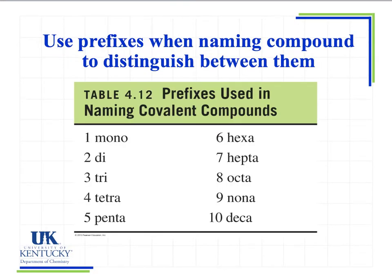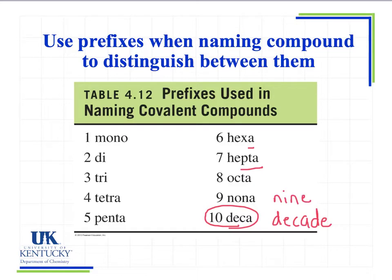The prefixes that tell us what we're looking at are: mono means one, di, tri, tetra, penta, hexa, hepta, octa, nona, and deca. So anytime I see the prefix deca, that means I have ten of that atom — deca sounds like decade, and they come from the same root word. Nona looks a little like nine. When we look at octa, we can think of our stop sign, which actually has eight sides to it — that's why I'm not an art student! Then hepta means seven, tri — we can think of a tricycle which has three wheels. Di is two. These are just some ways to remember what those prefixes mean, and you'll need to memorize them.